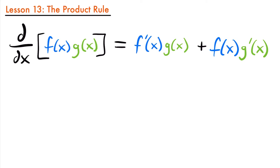It's going to be a little bit more complicated, but it is actually not too bad. The product rule says that if we have the derivative of two functions multiplied together, it's going to be equal to the derivative of our first function times the original second function, plus the original first function times the derivative of the second function.